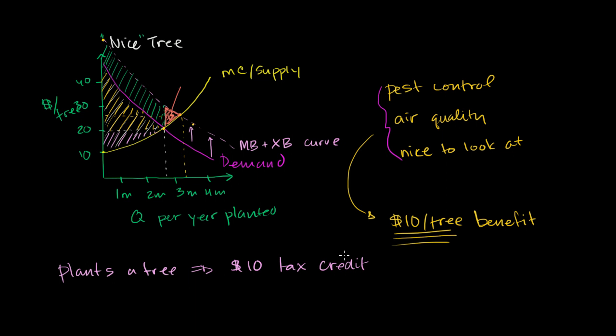So it's essentially saying, whoever plants one of these trees, their taxes are going to be $10 lower than what they would have otherwise had paid. And so, essentially, they're saying, look, whatever benefit you were going to get from the tree, we're going to give you $10 more benefit for that. And so, you're essentially making sure that the optimal quantity is being produced.